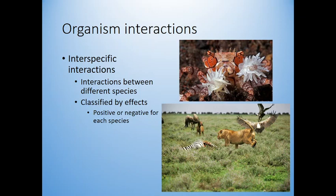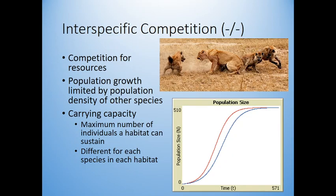We can think about this by looking at the positive and negative effects for each species. Our first interaction is competition — it's negative for both species. Think about this lion with these hyenas. If the lion wasn't competing, it would get more energy from its prey, wouldn't have to waste energy scaring the hyenas away. When two species have similar enough lifestyles, the population growth of one is limited by the other.